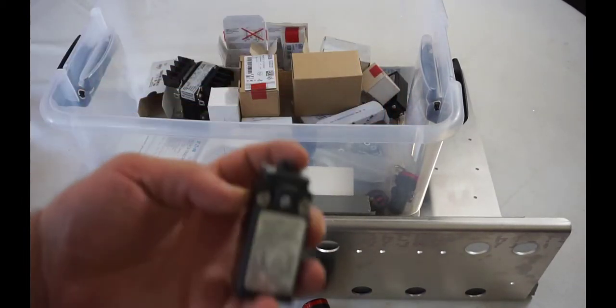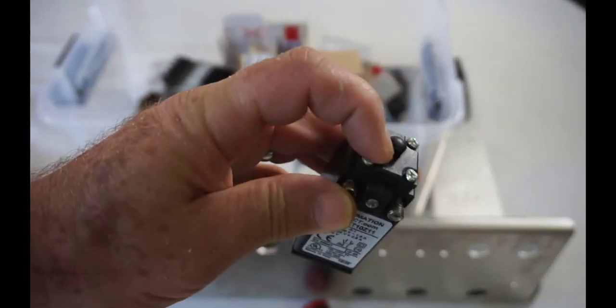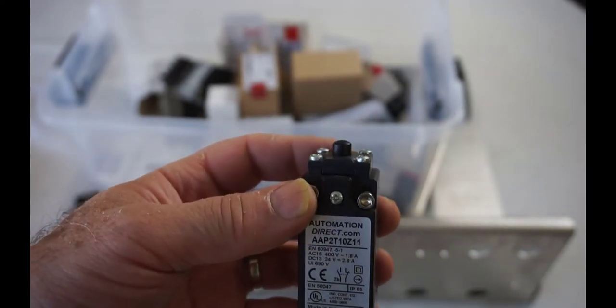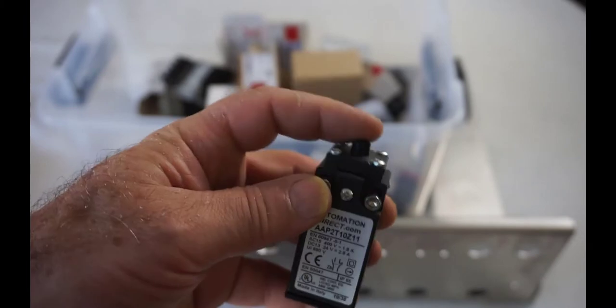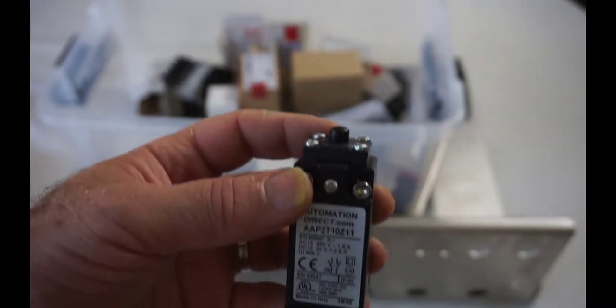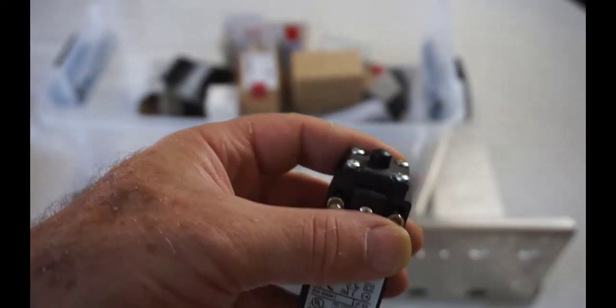We have some limit switches. The limit switches we have just have a push button on top. We don't have the various actuators - you have roller actuators, spring actuators, wide range of different types of actuators that go on top of here. It's up to you as part of the class to go and research those different types of actuators.